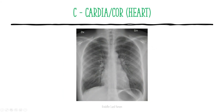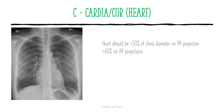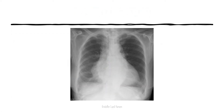C stands for cardia, or cor, which means heart. The main thing to do in this step is to assess the size of the heart. The heart should be about or less than 50% of the chest diameter on a posterior anterior projection, and under 60% on an anterior posterior projection. In this example, the heart is approximately 45% of the chest diameter. We can see the outline of the left ventricle and the right atrium. Another picture shows a large heart taking approximately 75% of the width of the mediastinum.